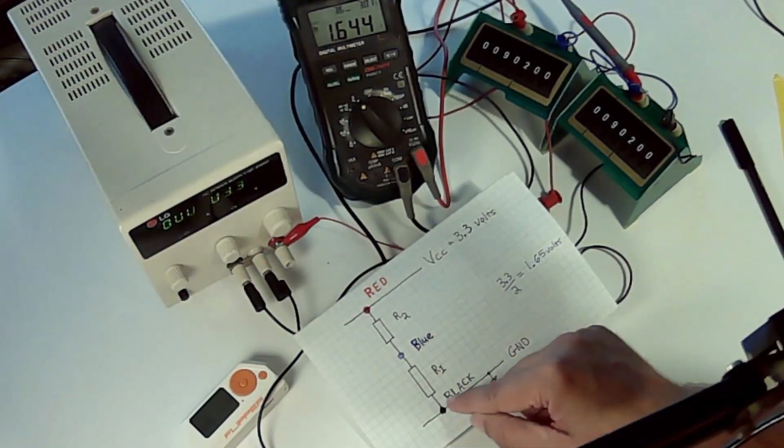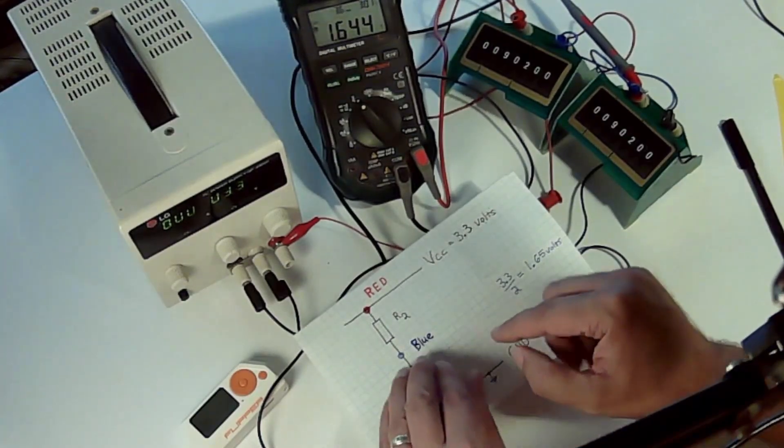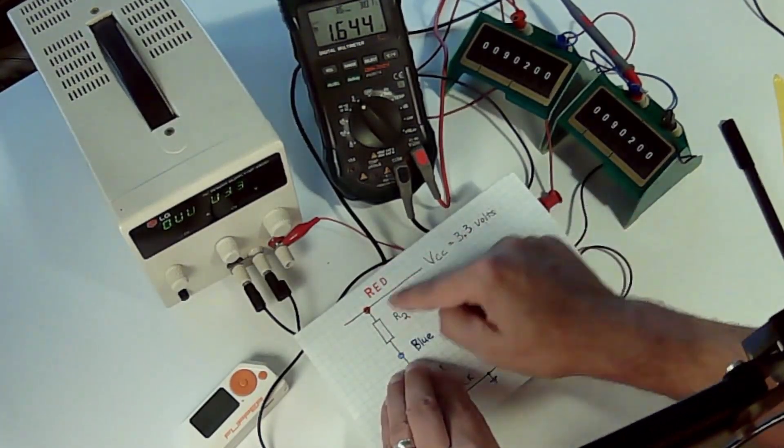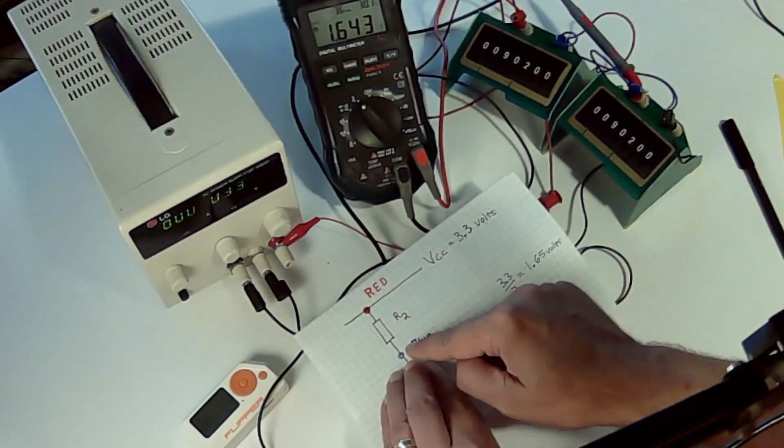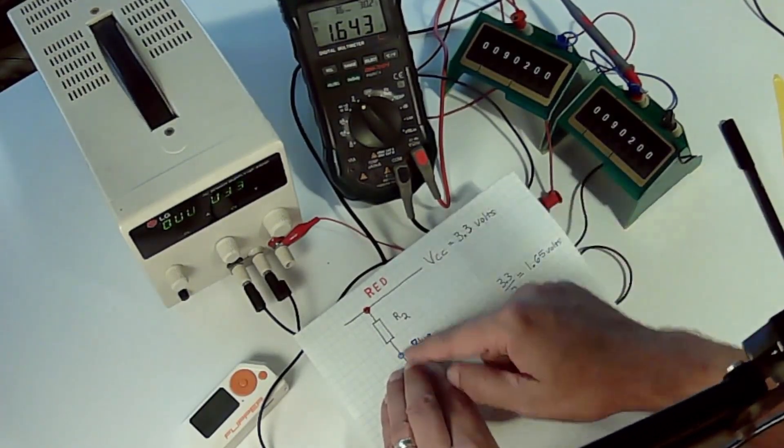And then if you were to disconnect your ground and only measure here, you would get VCC. So you'll know what that voltage is that you need to divide in half.